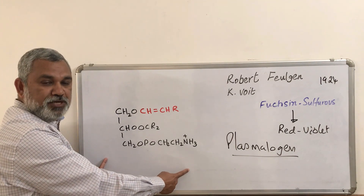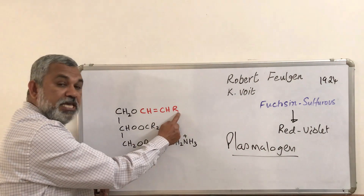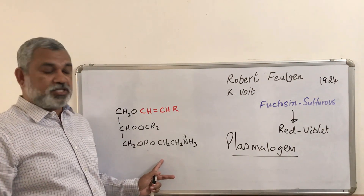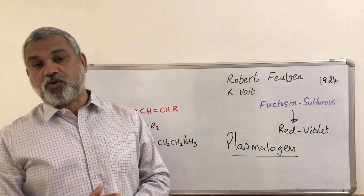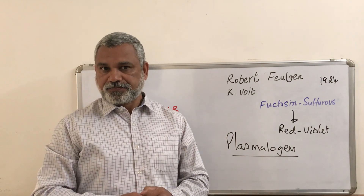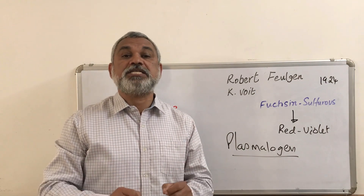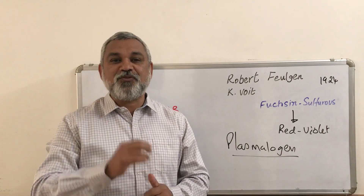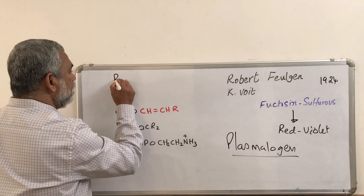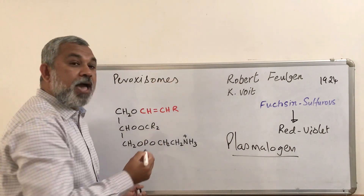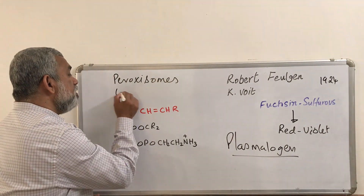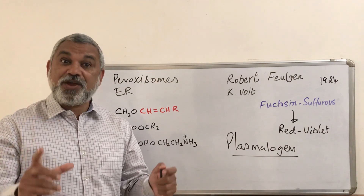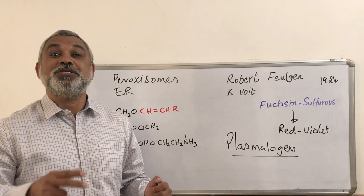We are going to understand in seven steps how the plasmalogen molecule is being produced. This is the structure of a plasmalogen molecule. This is an ether bond, this is an ester bond, and the choline or ethanolamine molecule is attached to a basic structure of glycerol-3-phosphate. These reactions occur in two different locations in a cell: the first two reactions take place in the peroxisomes, and the remaining reactions occur in the endoplasmic reticulum. This is how a pathway uses two different locations to synthesize plasmalogen.